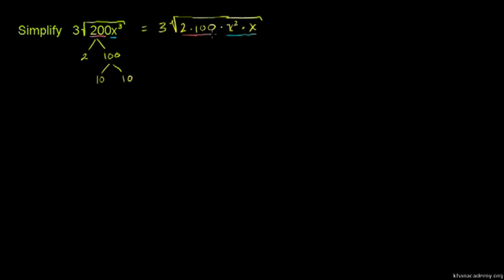We can open up 200 into 100 times 2. So we have 3 times the cube root of 2 times the cube root of 100 times the cube root of x squared times the cube root of x.